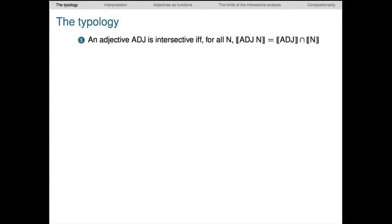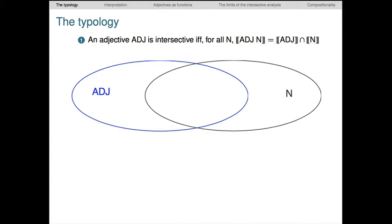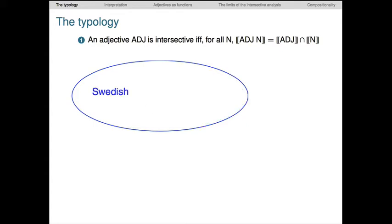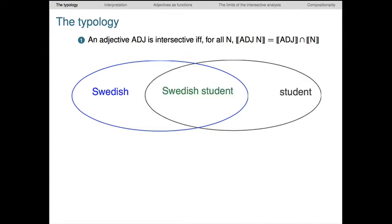We say that an adjective ADJ is intersective if and only if, when we combine it with a noun N, the resulting meaning is just the intersection of the meaning of ADJ and the meaning of N. For instance, if we treat the adjective Swedish as denoting the set of all Swedes, that is if we assume it can have an intersective analysis, and if we treat the noun student as denoting the set of all students, then their semantic combination is just the intersection, the set of all things that are both Swedish and students.